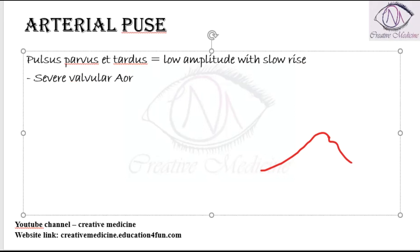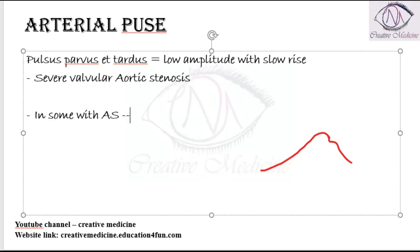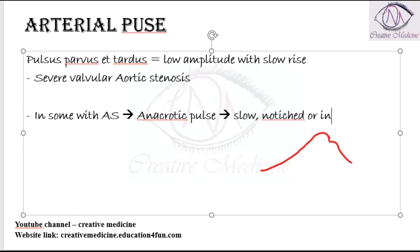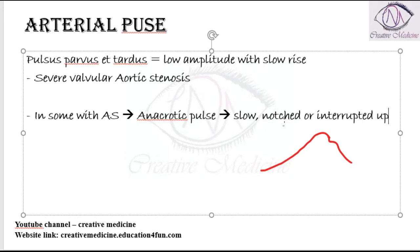Some patients with aortic stenosis also have another type of pulse called the anacrotic pulse. The anacrotic pulse is characterized by a slow, notched, or interrupted upstroke.